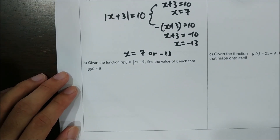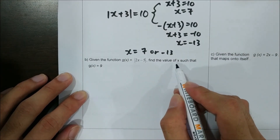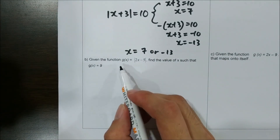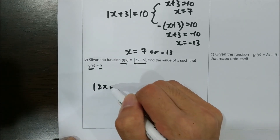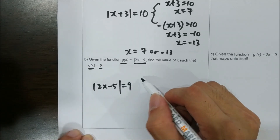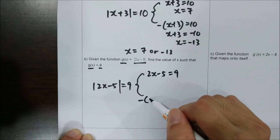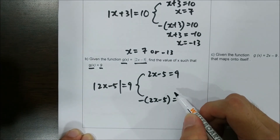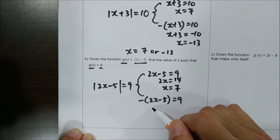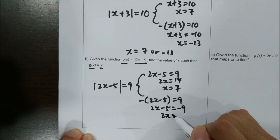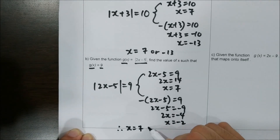The next question is similar. Given g(x) equals the modulus of 2x minus 5, find the values of x such that g(x) equals 9. So |2x - 5| equals 9, giving two cases. Case 1: 2x minus 5 equals 9, so 2x equals 14, x equals 7. Case 2: 2x minus 5 equals negative 9, so 2x equals negative 4, x equals negative 2. So x equals 7 or negative 2.